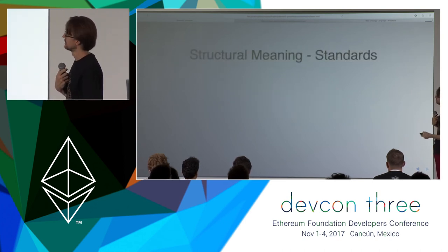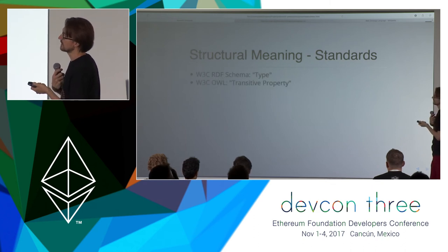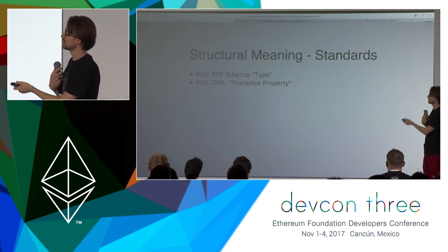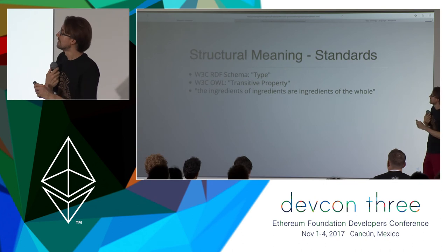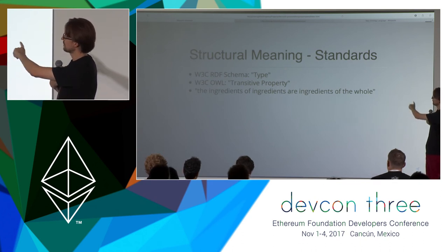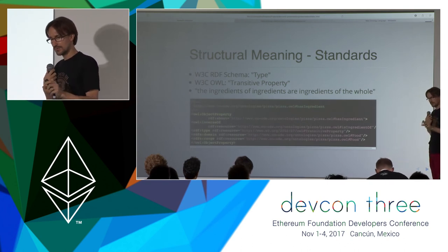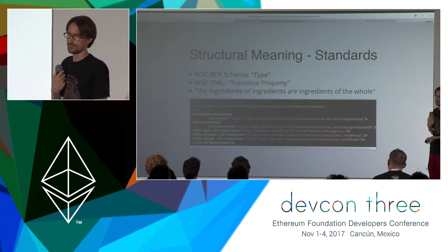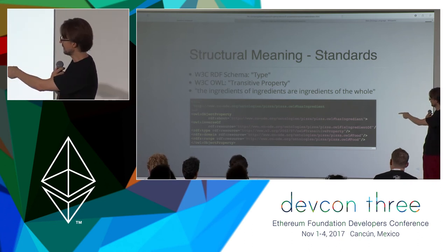Here's how the standard comes about. In the ontology standard W3C OWL, there's something called a transitive property — an almost philosophical notion. Ingredients of ingredients are ingredients of the whole. The idea is that you have an ingredient on a pizza; that ingredient may have a sub-ingredient, but that sub-ingredient is still an ingredient of the pizza. You have to tell a machine about that, otherwise it's going to get very confused and possibly make a pizza that isn't going to work out.